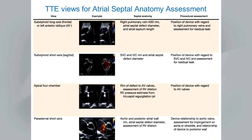The next three slides cover key views for transthoracic, transesophageal, and intracardiac echo for assessing atrial septal anatomy. A central theme is that we use multiple views, often rotating through multiple planes to completely interrogate the intra-atrial septum. For transthoracic echo, the subzyphoid long axis and LAO view, the subzyphoid short axis or sagittal view, apical four-chamber, and parasternal short axis views are all used to interrogate the multiple portions of the intra-atrial septum and surrounding structures.